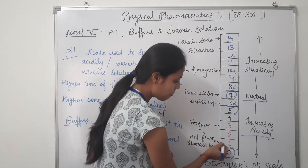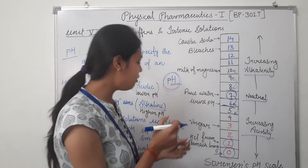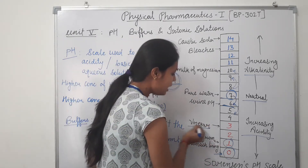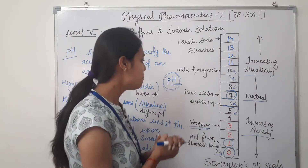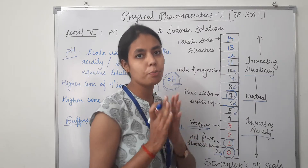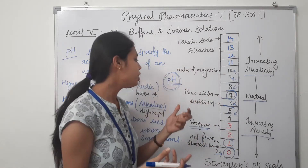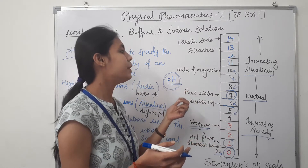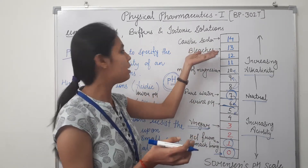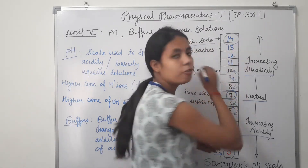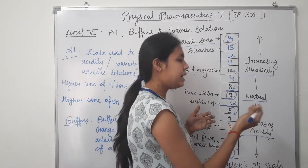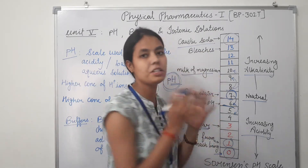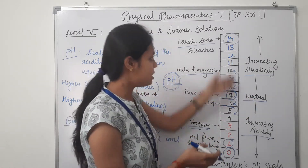For example: hydrochloric acid from the stomach lining has a pH value of 1. A common chemical example, vinegar, has a pH value of approximately 2.9 to 3. Pure water has a pH value of 7. Urine pH is approximately 5.8 to 6. In the alkaline region, the most alkaline compound is caustic soda, having a pH value of 14. Bleach has a pH ranging from 12 to 13. Milk of magnesia has a pH value of 10.